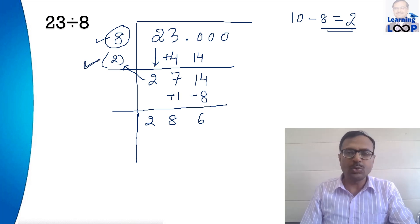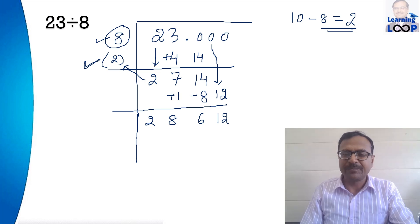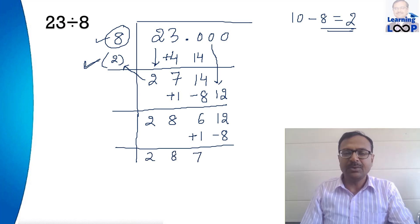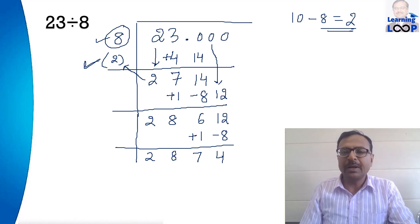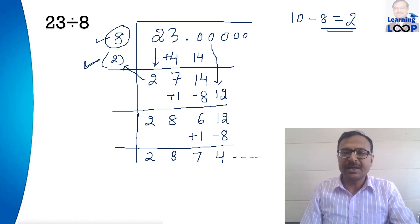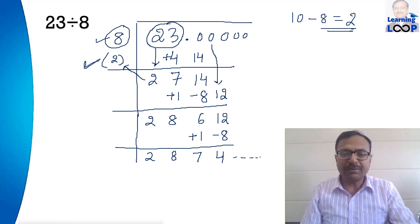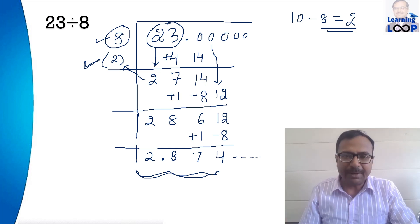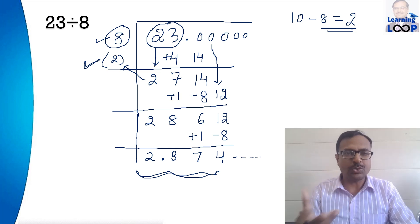Again, 6 times the deficit 2 is 12. I write that under the next 0, giving 0 plus 12 equals 12. Since 12 is more than 8, I reduce it by 8 and add 1, giving digits 2, 8, 7, and 4. You can continue this process by putting more zeros for any number of digits. So 2.874 is the quotient when you divide 23 by 8 — that's the answer to approximately 3 decimal places.